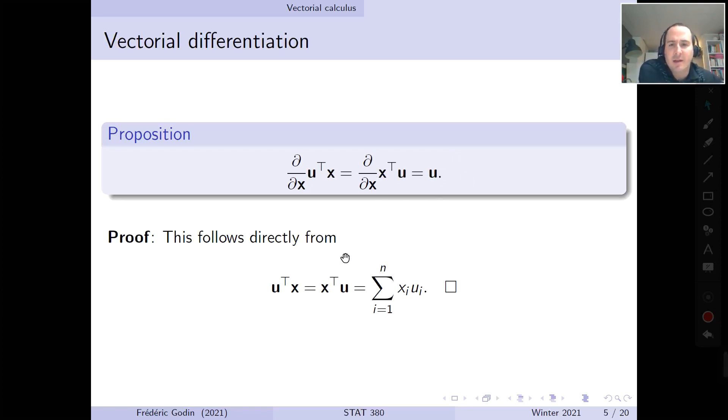But now, why is that the case in the vectorial setting also? Well, the proof is pretty direct for this one. It's because u transpose x or x transpose u, this is, as we said, the scalar product between x and u, so this is the sum across all elements, so i goes from 1 to n of x_i u_i. So if we differentiate, let's say we differentiate this guy, u transpose x with respect to some, let's say x1, then differentiating this with respect to x1 would clearly be u1, because the first term, x1 u1, when we differentiate with x1 with respect to x1, the x1 disappears and the u1 stays, and all other terms don't depend on x1, so they simply vanish, so we have this result.